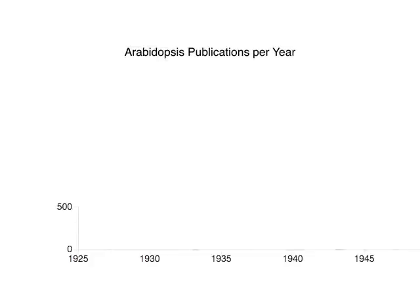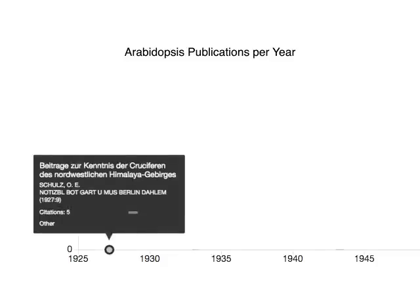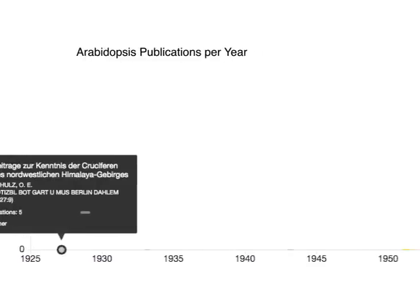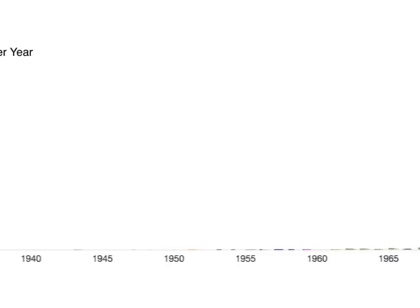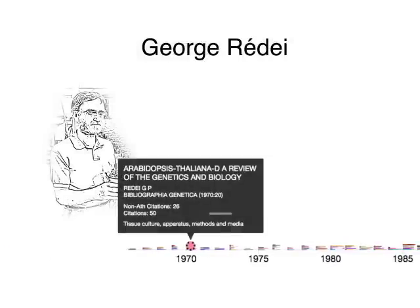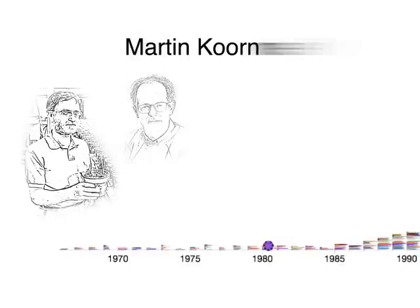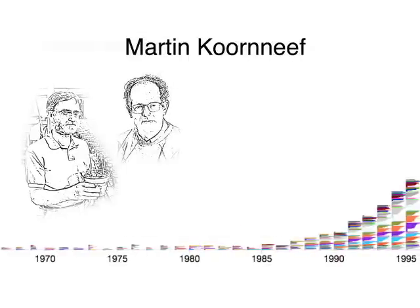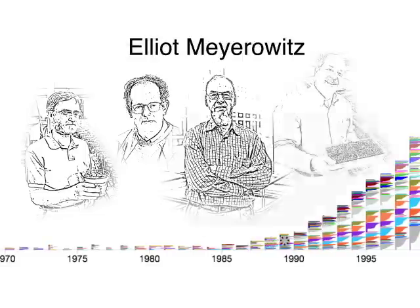The first cited Arabidopsis paper in the Thomson Reuters Biosys database was from 1927 by O.E. Schultz on crucifers found in mountains, entitled 'Beiträge zur Kenntnis der Kruzifern des nordwestlichen Himmeliergeberges.' Since the adoption of Arabidopsis as a model plant in the 1970s and 80s by pioneers such as George Redey, Martin Courneve, Chris Somerville, and Elliot Meyerowitz...